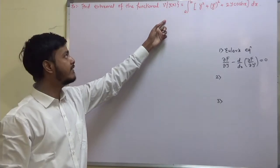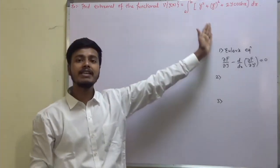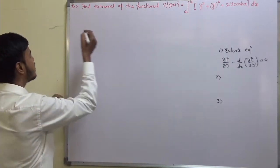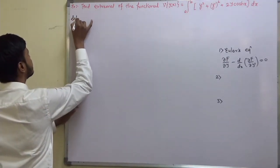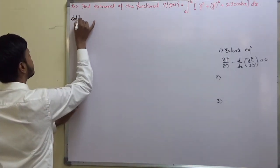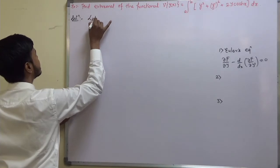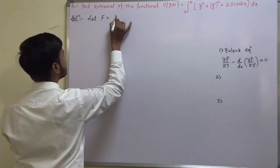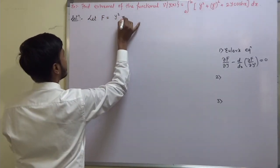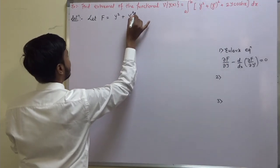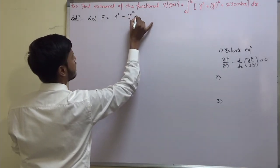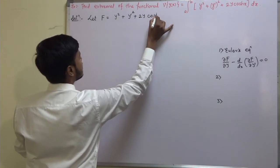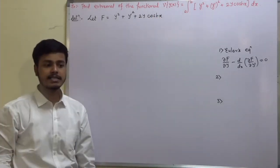Whenever you have to find the extremal of any functional, we write down the integrand function which we denote by f. So let f equal to y-squared plus y-dash squared plus 2y cosh(x).